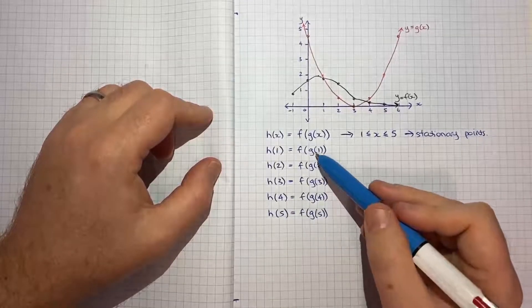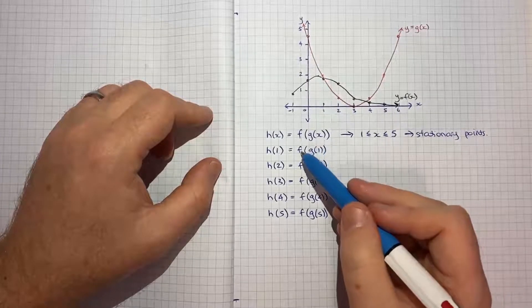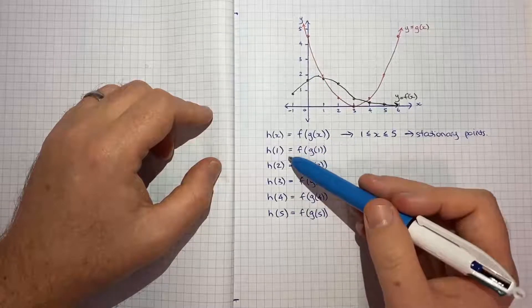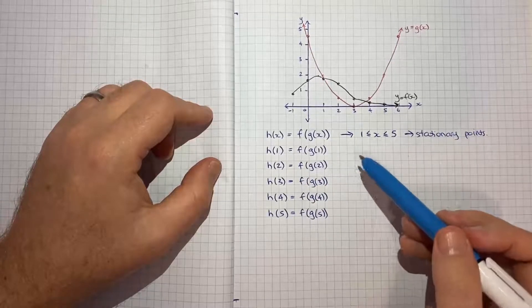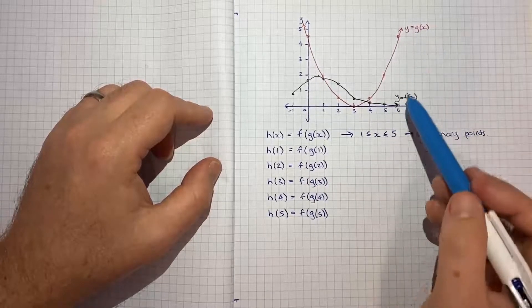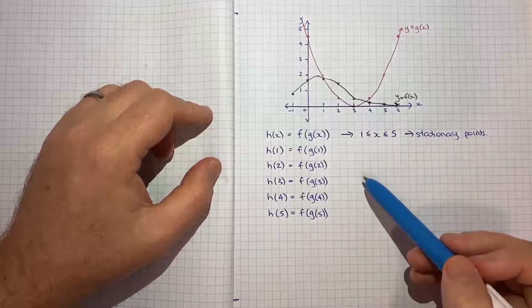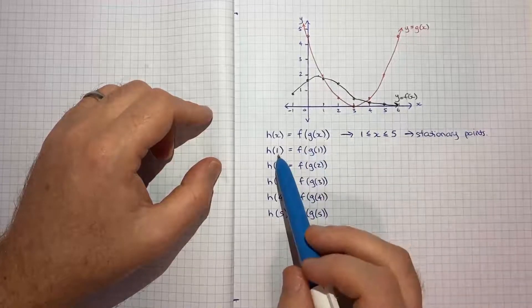So if we can evaluate g 1, g 2, g 3, g 4, g 5, whatever that result is we evaluate f of that and then plot these points, we should be able to then work out where the stationary points are. It won't be perfect because we don't have the exact functions, we're really just going to be inspecting the charts we have, but hopefully it gets close enough to get to the right answer.